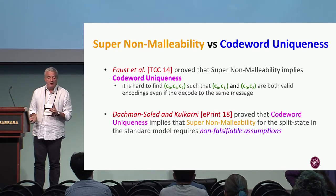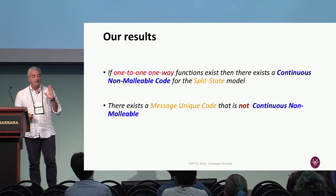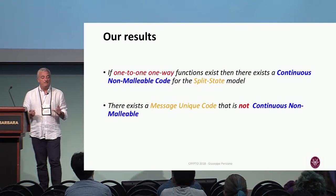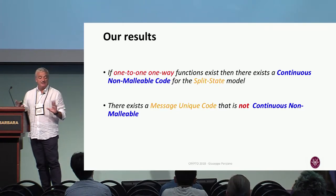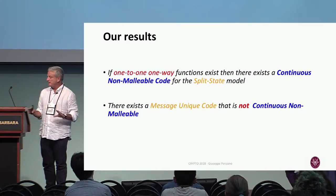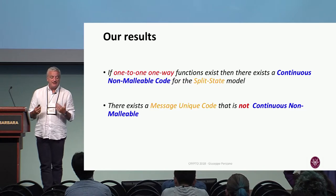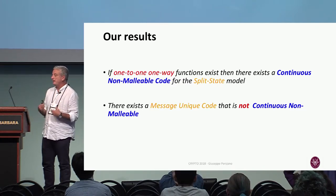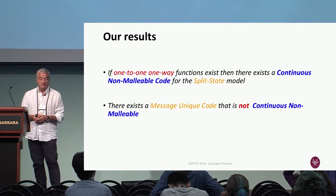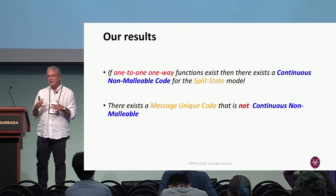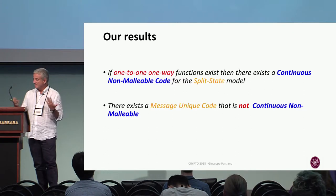So what do we do? We go back to the standard non-malleability of the original paper by Dziembowski et al. We prove that if one-way functions exist, then there exists a continuous non-malleable code in the split-state model in the standard model — no CRS, no non-falsifiable assumptions. We also prove that there exists a message-unique code that is not continuously non-malleable; in fact, for a while during our research, we thought uniqueness was not only necessary but also sufficient.